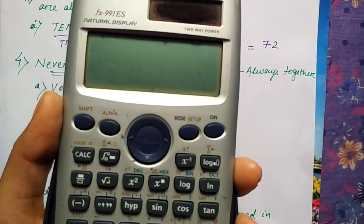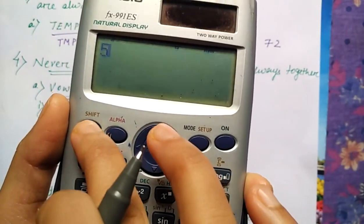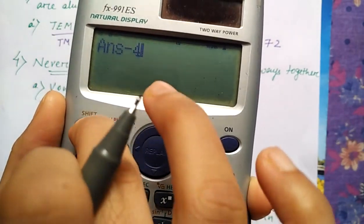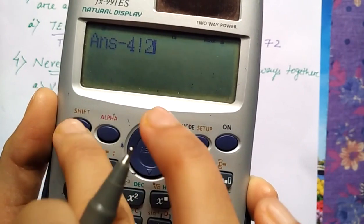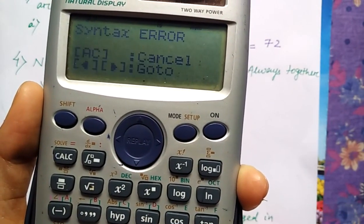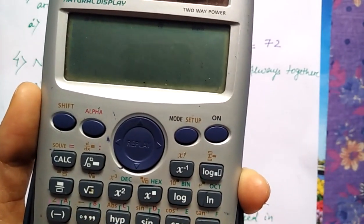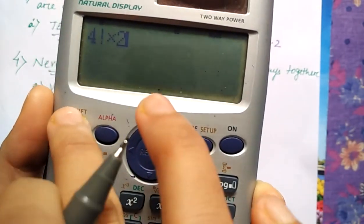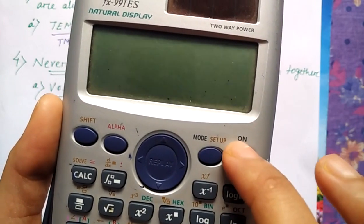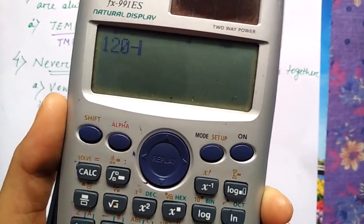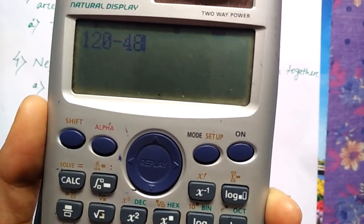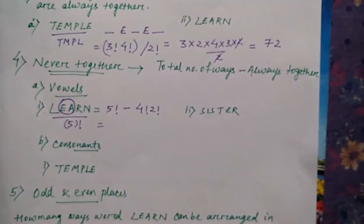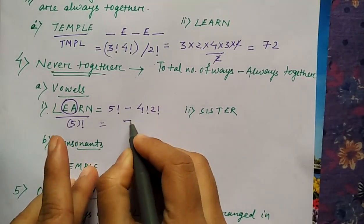We can easily calculate using the calculator that one. So first is what is five factorial that you can calculate on your own also. That is 120 minus four factorial into two factorial. So that will be like here it is not coming for four factorial into two factorial. So what is the answer for it? 48 and five factorial is 120. So 120 minus 48. You can easily do it. So what is the answer for it? 72. So our answer is now 72.